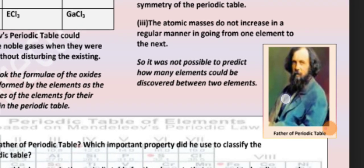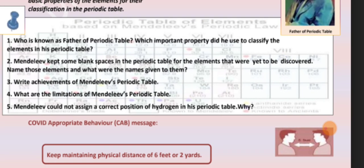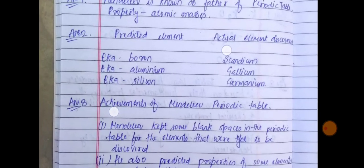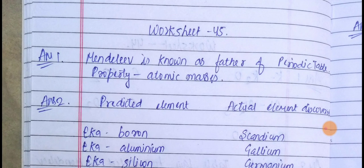Question: Who is known as the father of the periodic table? Which important property did he use to classify the elements in his periodic table? Answer: Mendeleev is known as the father of the periodic table, and the property used was atomic masses.